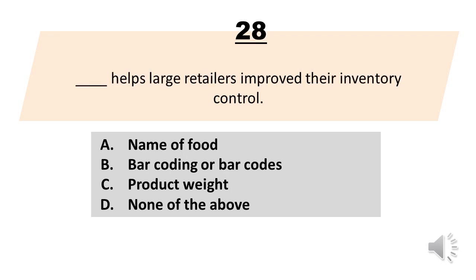Blank helps large retailers improve their inventory control. A. Name of food. B. Barcoding or barcodes. C. Product weight. D. None of the above. The correct answer is Letter B, Barcoding or barcodes.